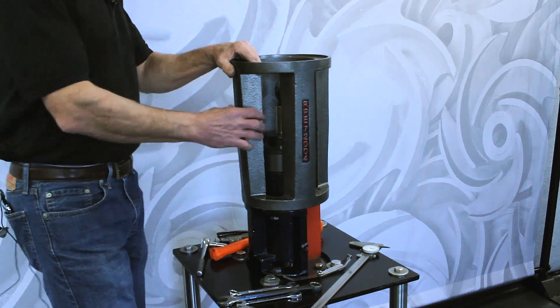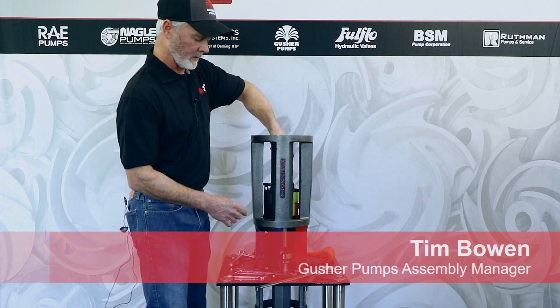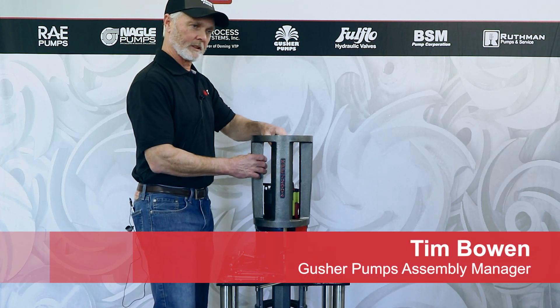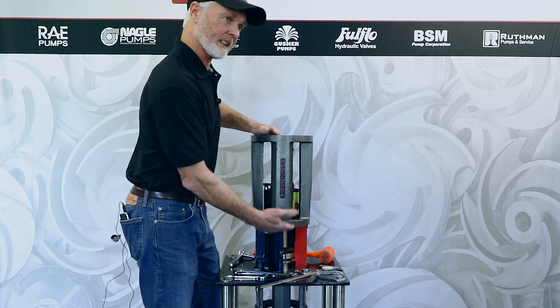What we have here is a Gusher 7550 series vertical pump. Today we're going to demonstrate this impeller adjustment on a cutaway pump so you can see the impeller and the parts moving inside the bearing housing.